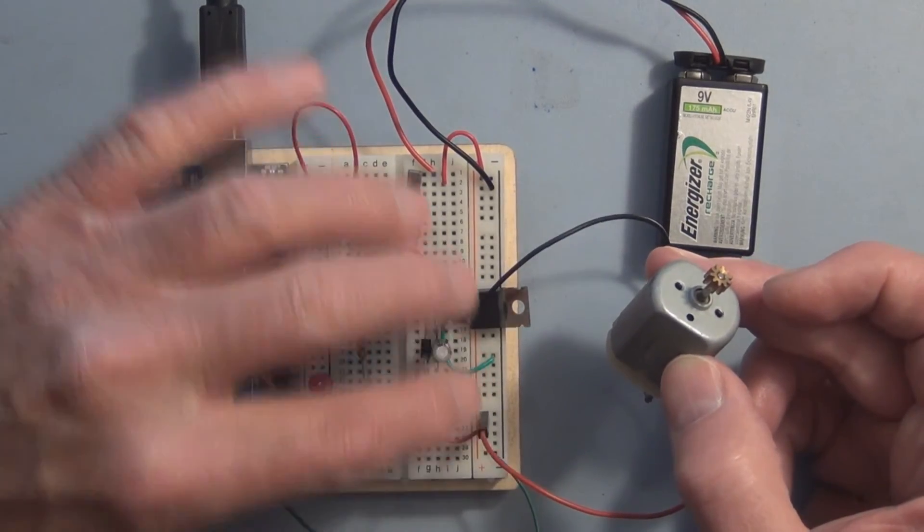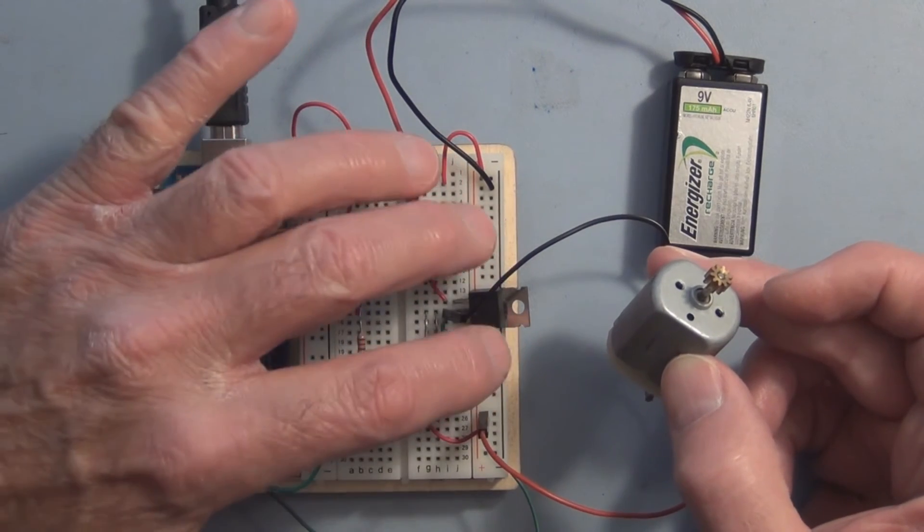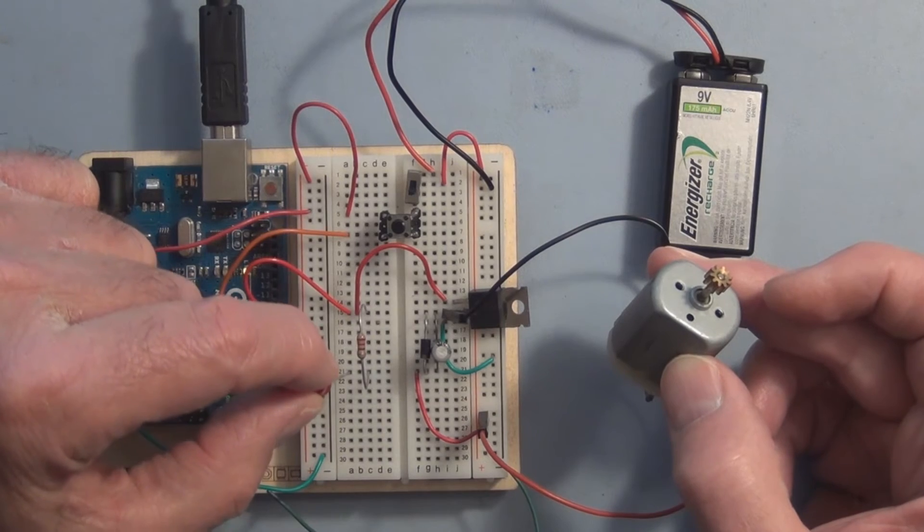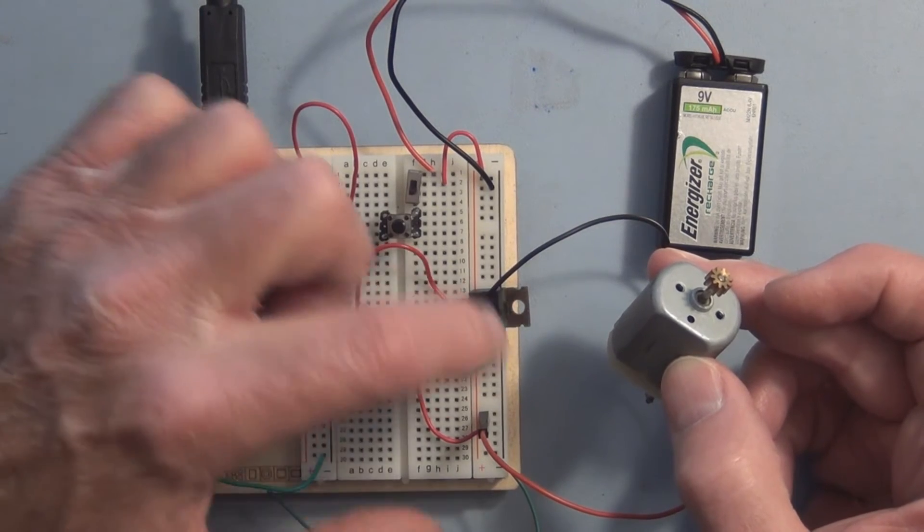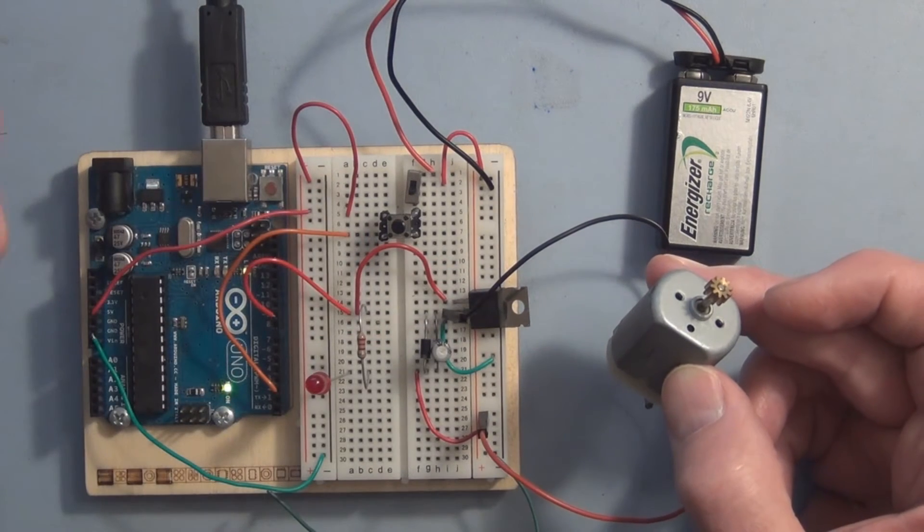So before you get the MOSFET circuit working, if your MOSFET circuit isn't working but you're still able to light this LED, that tells you that there's something wrong with the wiring in this circuit here.